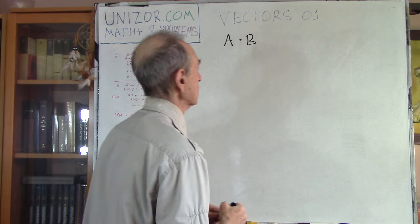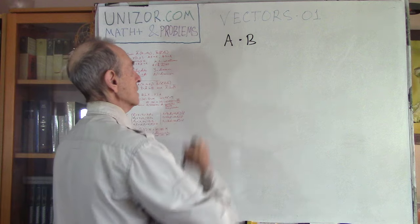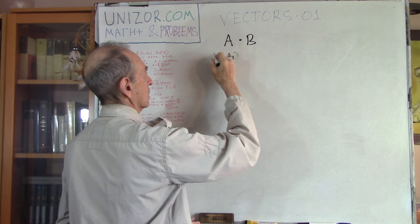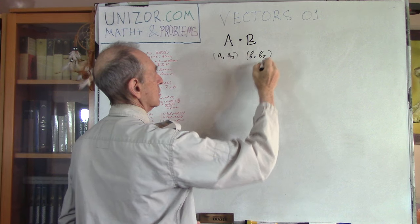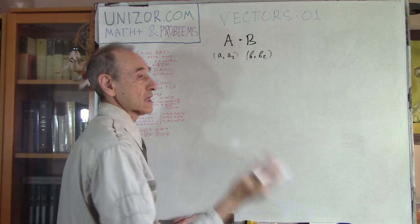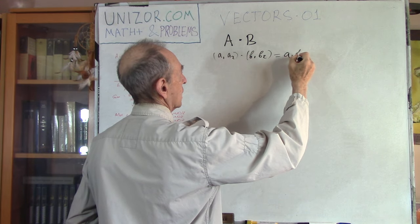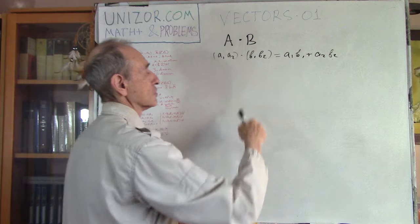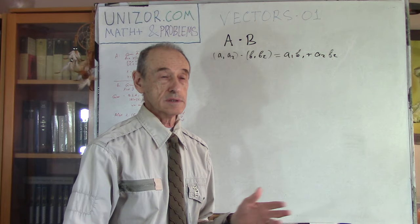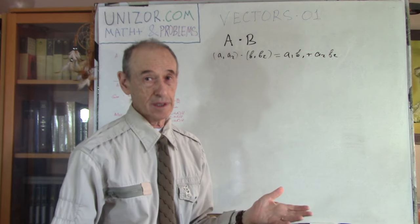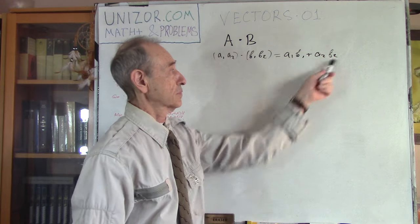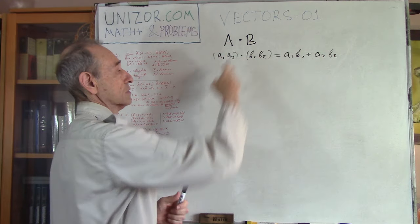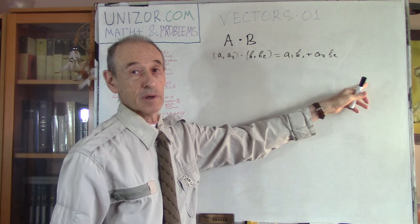Let me remind you that in coordinate form, in the two-dimensional world, vector A has two coordinates A1 and A2, and vector B has B1 and B2. Their scalar product is A1·B1 plus A2·B2. In three-dimensional or any N-dimensional case, the formula is exactly the same, extended as A1·B1 plus A2·B2 plus A3·B3, and so on. The result of the scalar product of two vectors is a real number — a scalar.